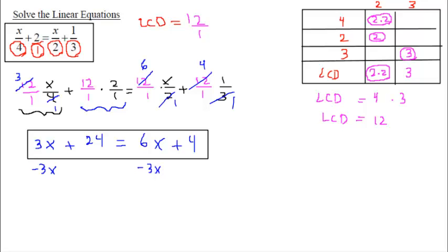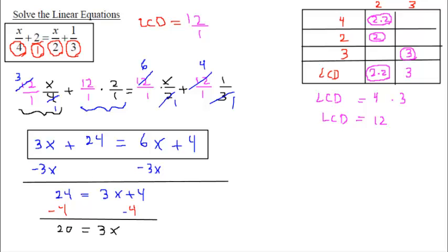So we get 24 is equal to 3x plus 4, then I can subtract 4. On the left-hand side I get 20 is equal to 3x.